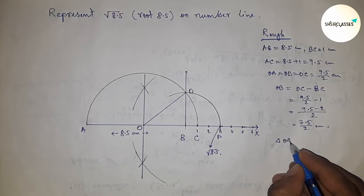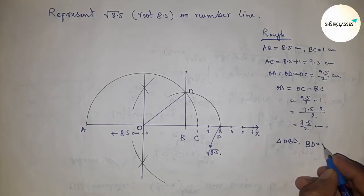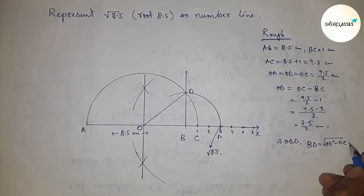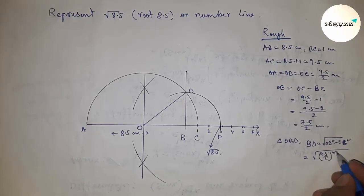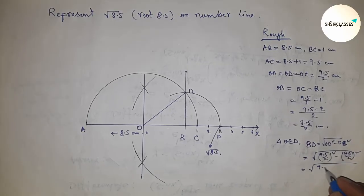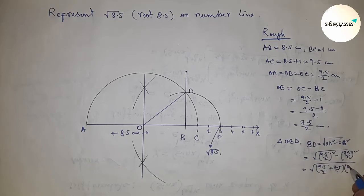In right angle triangle OBD, we can write by Pythagorean theorem: BD equals hypotenuse squared minus base squared. Put the value of hypotenuse and base and apply the formula a² - b² = (a+b)(a-b).